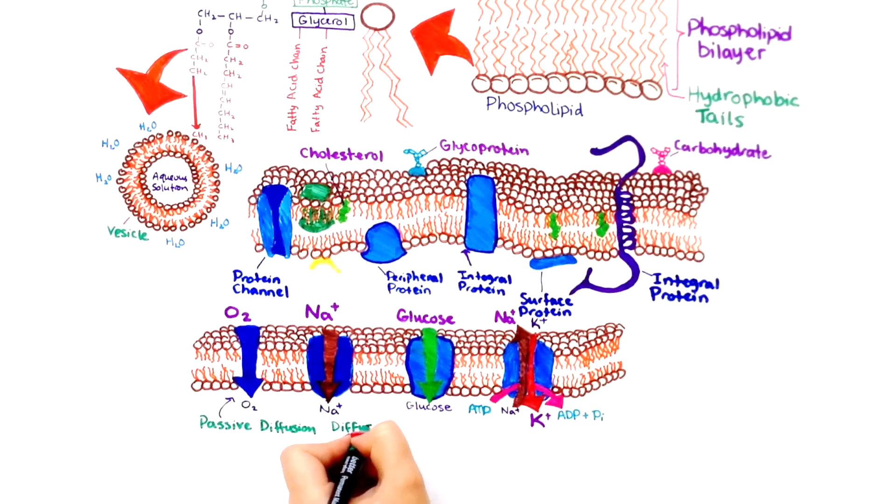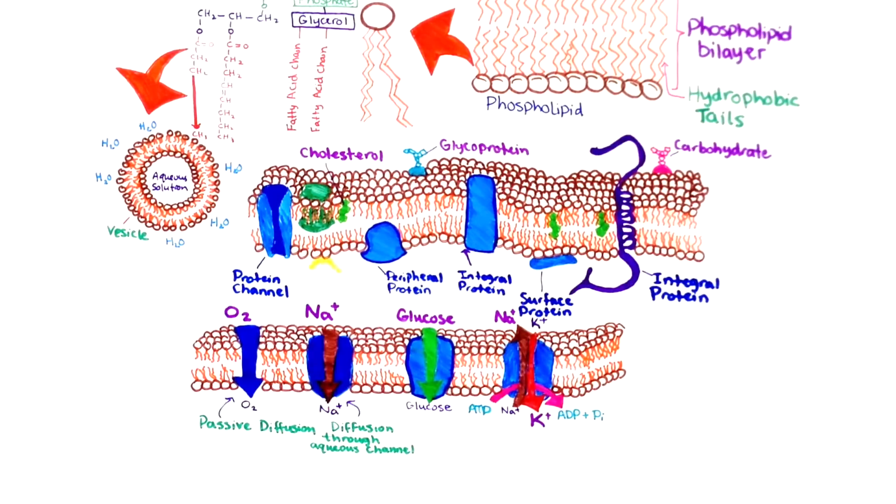There are two kinds of transport protein. Channel proteins form a water-filled pore, or channel, in the membrane. This allows charged substances, usually ions, to diffuse across membranes. Most channels can be gated, opened, or closed, allowing the cell to control the entry and exit of ions.